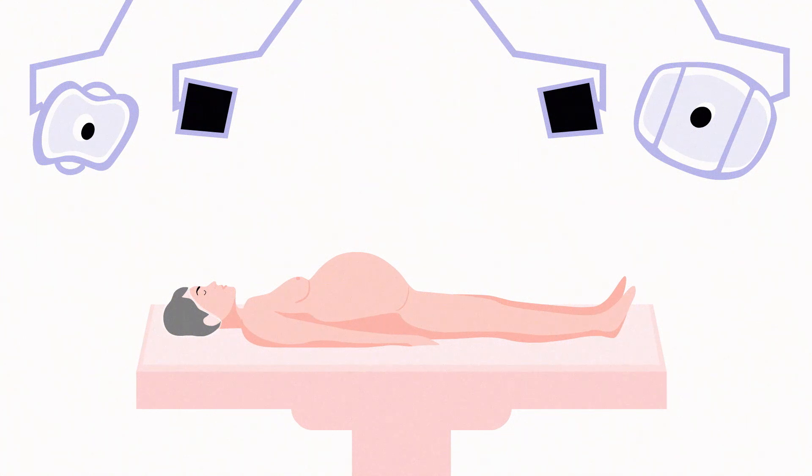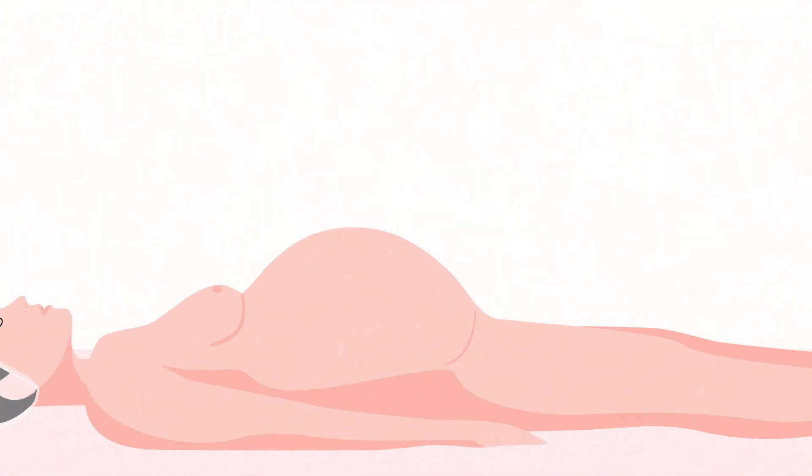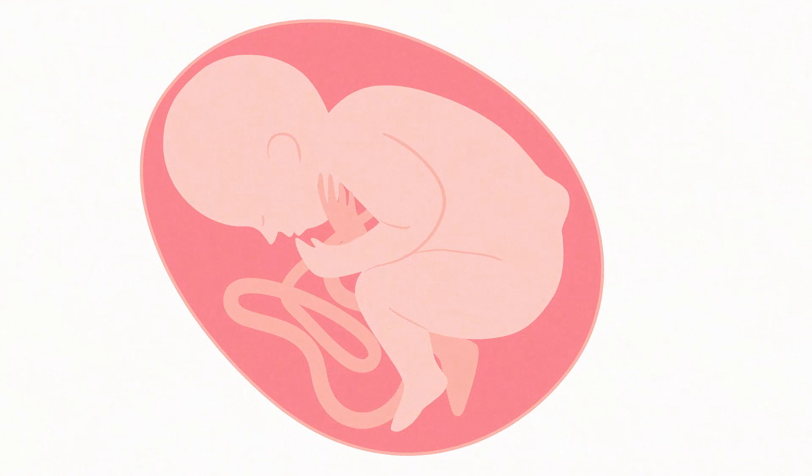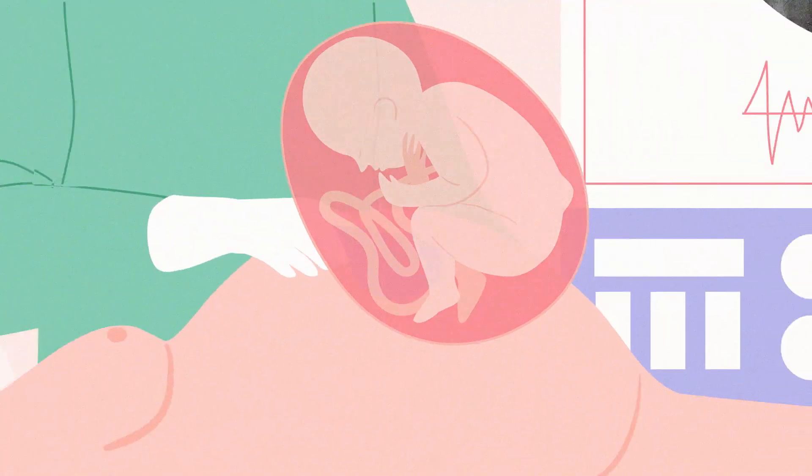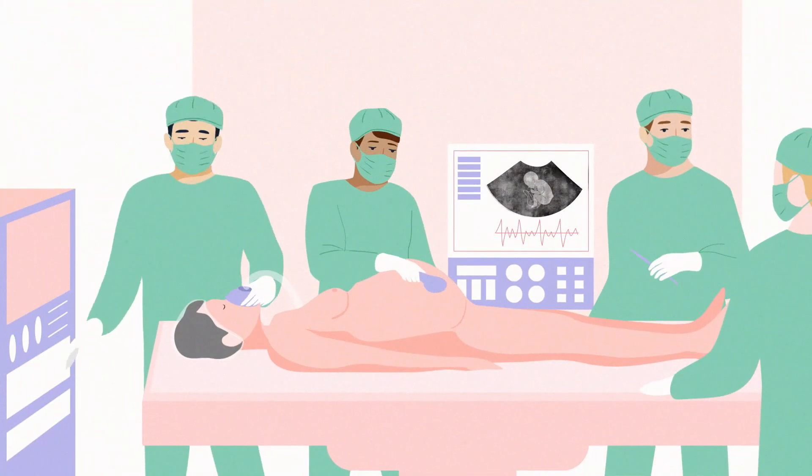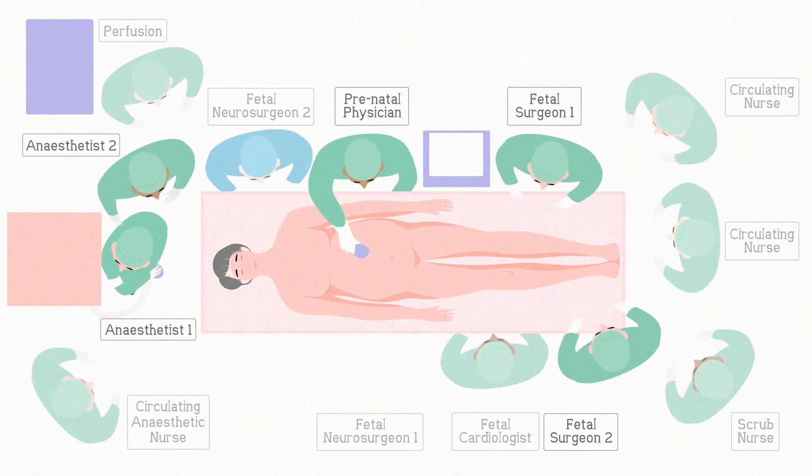Great Ormond Street and University College Hospital have conducted pioneering surgery to help reduce the symptoms of spina bifida by operating on a baby whilst it's still in the womb. This innovative surgery requires an experienced multidisciplinary team.